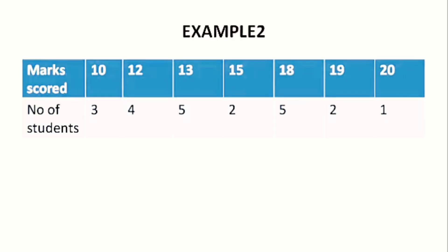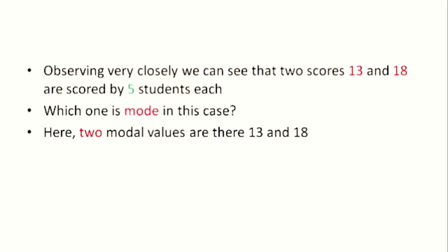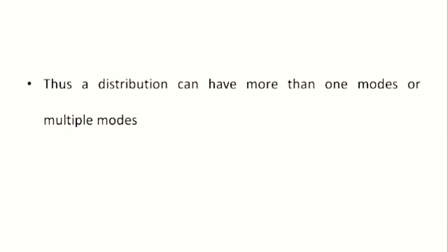Consider another example. The marks scored by students and the number of students: score 10 by 3 students, 12 by 4 students, 13 by 5 students, 15 by 2 students, 18 by 5 students, 19 by 2 students, and 20 by 1 student. Observing closely, two scores — 13 and 18 — are each scored by 5 students. So there are two modal values: 13 and 18. Thus, a distribution can have more than one mode or multiple modes.